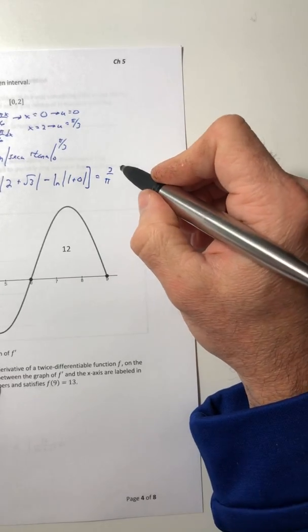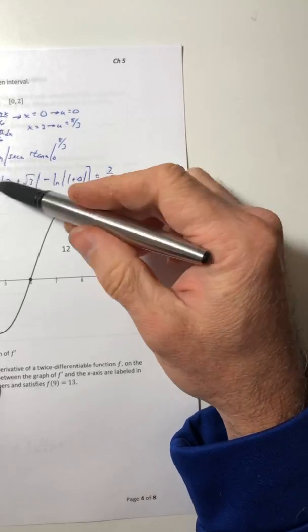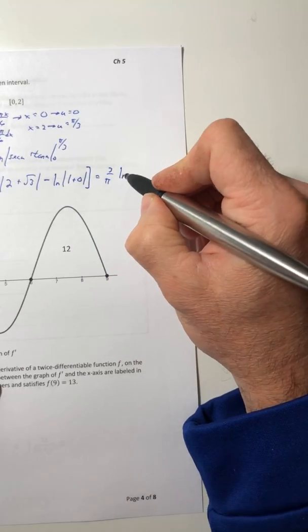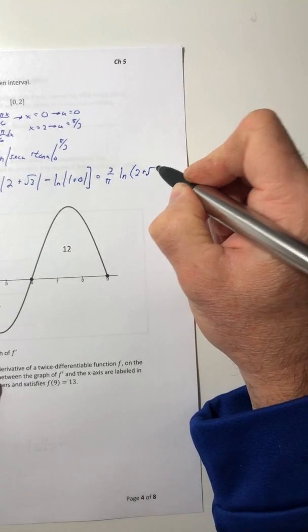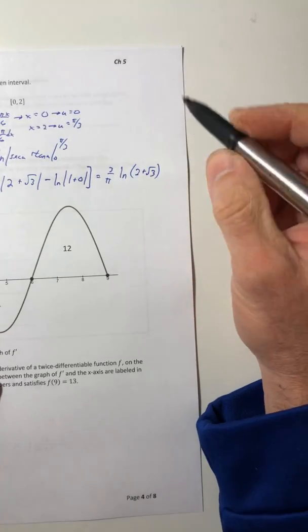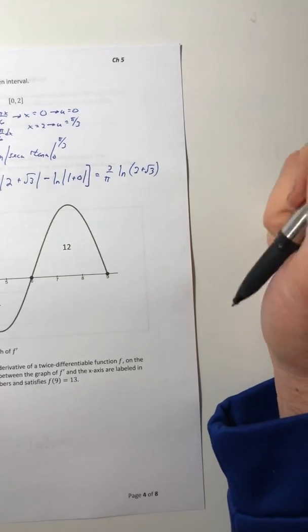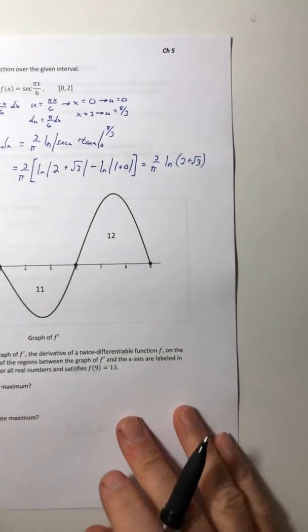So now you can simplify it down. 3 over pi on the outside, on the inside 2 plus root 3. That's positive so I can get rid of the absolute value bars. They're no longer necessary. And ln of 1, that's just 0, so that gets knocked out. And there's your solution.